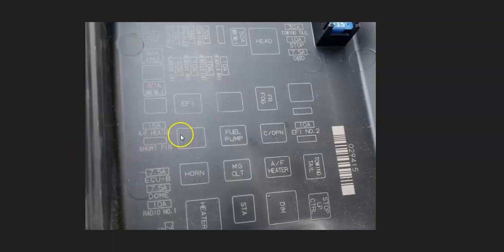For example, this is a 2005 Toyota Tacoma fuse box, and right here it says AF heater—that's the fuse for this. The reason it says heater is because many of these sensors have small heating elements in them to monitor the catalytic converter. This is an air-fuel ratio heater sensor; it has both inside of it.